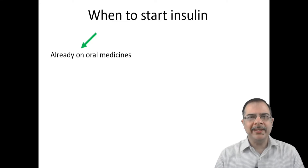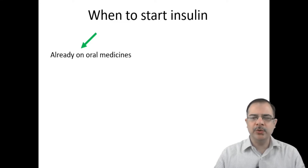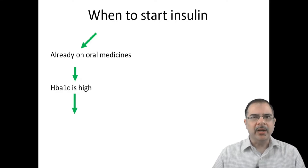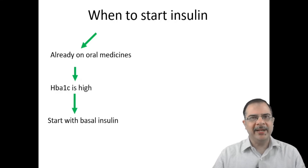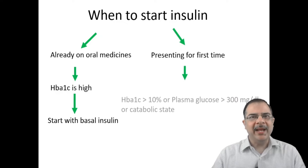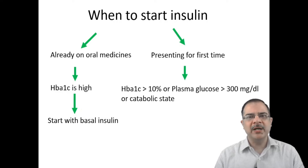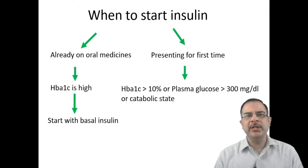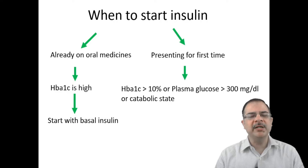Let's see when to start insulin in a patient with type 2 diabetes. The first indication is when the patient is already on three or more oral medications and HbA1c is still not in target range. The second indication is when the patient presents for the first time with HbA1c more than 10%, plasma glucose more than 300, or is in a catabolic state.